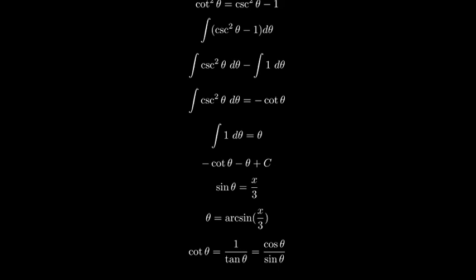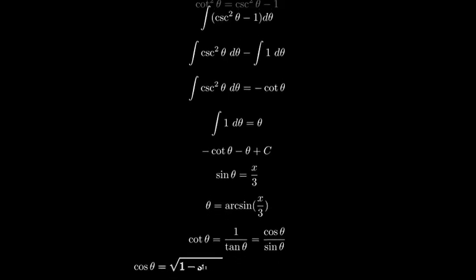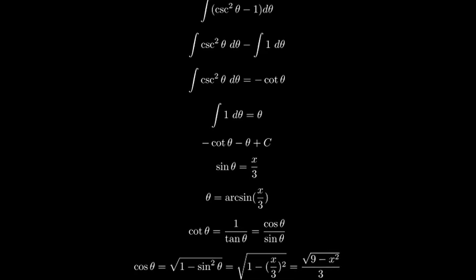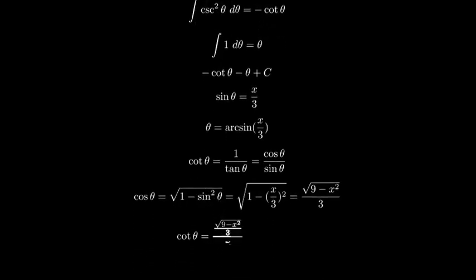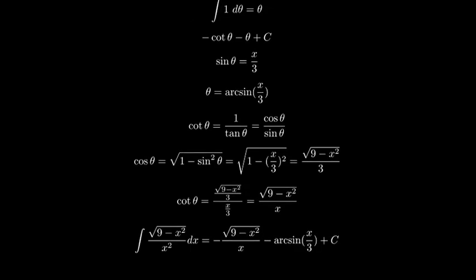From the identity, cosine theta equals the square root of 1 minus sine squared theta, which in our case is the square root of 1 minus x over 3 squared, simplifying to the square root of 9 minus x squared over 3. Plugging cosine theta and sine theta into our cotangent equation, we get cotangent theta equals the square root of 9 minus x squared over x. Finally, we substitute the expressions for cotangent theta and theta back into our integral to get our final result.